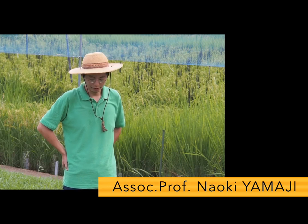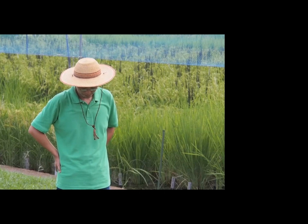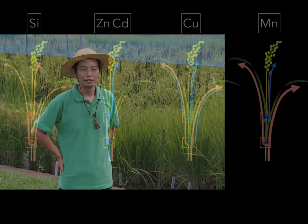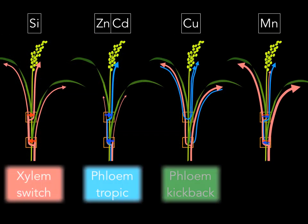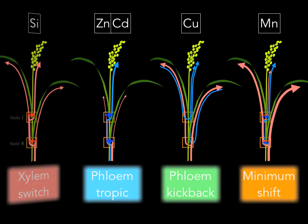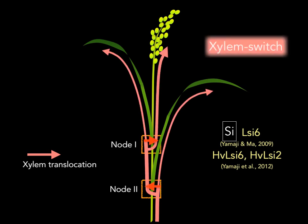The intervascular transfer is mediated by various transporters localized at different vascular tissues in the node. Recently, a number of node-localized transporters have been identified. In this opinion paper, we propose four modes of distribution for different mineral elements. The first one is the xylem switch mode, which refers to transfer of an element from the xylem of enlarged vascular bundles to the xylem of diffuse vascular bundles.